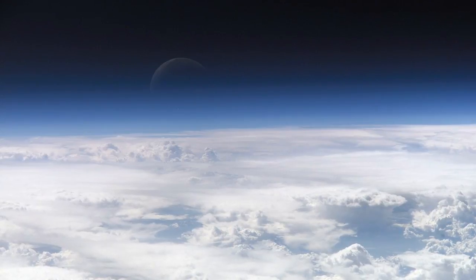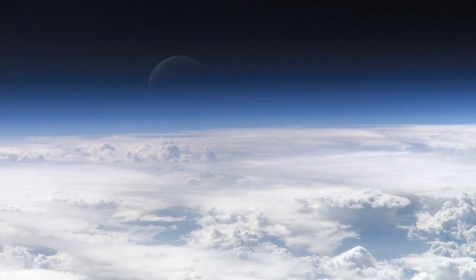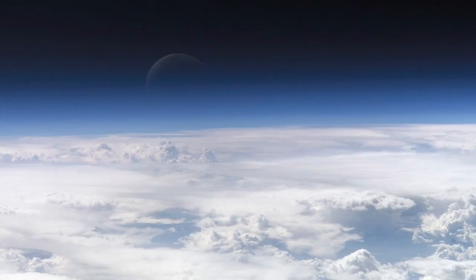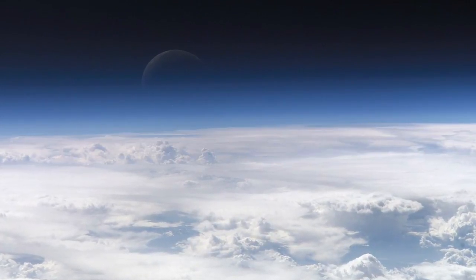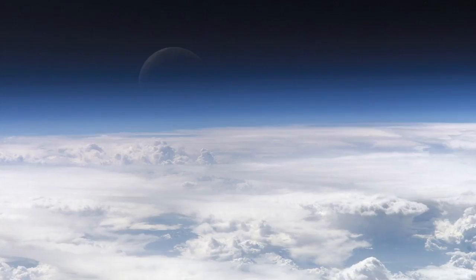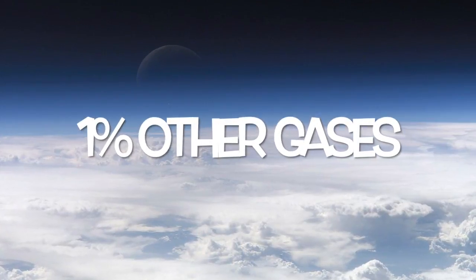Unlike other planets in our solar system, Earth has a unique atmosphere. Earth's atmosphere is 78% nitrogen, 21% oxygen, and the final 1% are other gases.